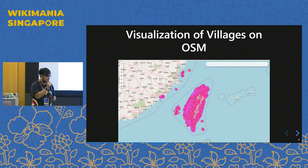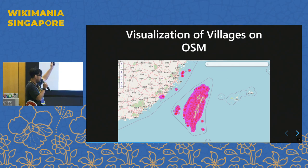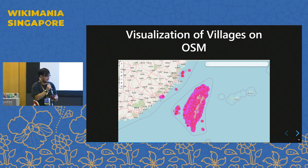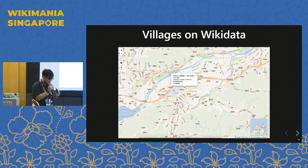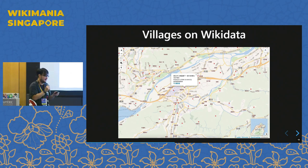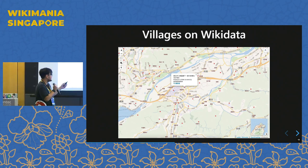Here's the visualization on OpenStreetMap — all nearly 8,000 villages are visualized on the website Overpass Turbo. And this is a Wikidata query — a SPARQL search query — and the results show the central point of each village near Taipei city.